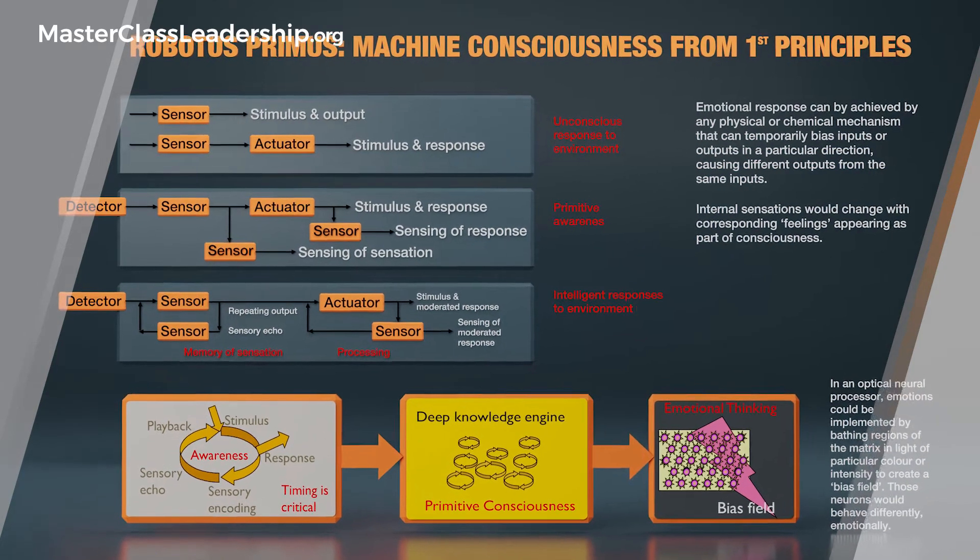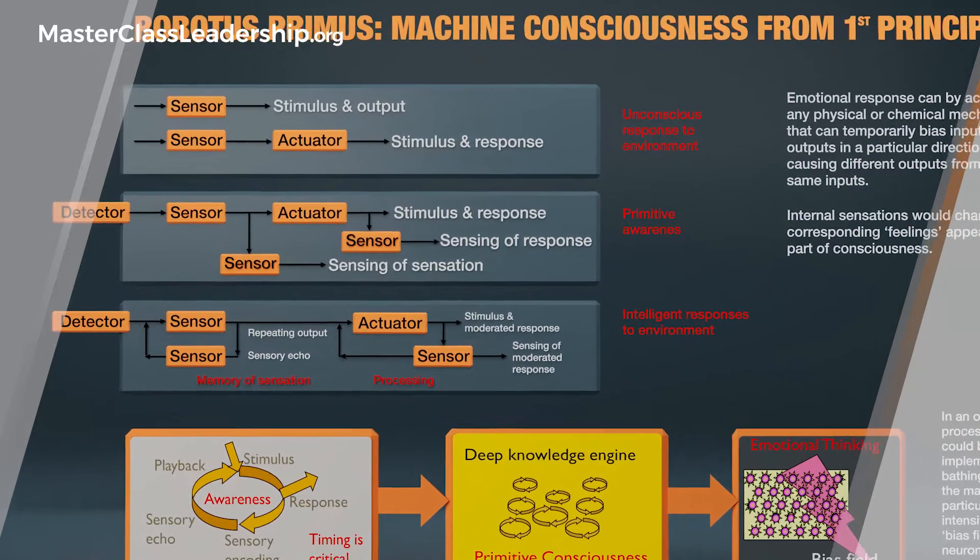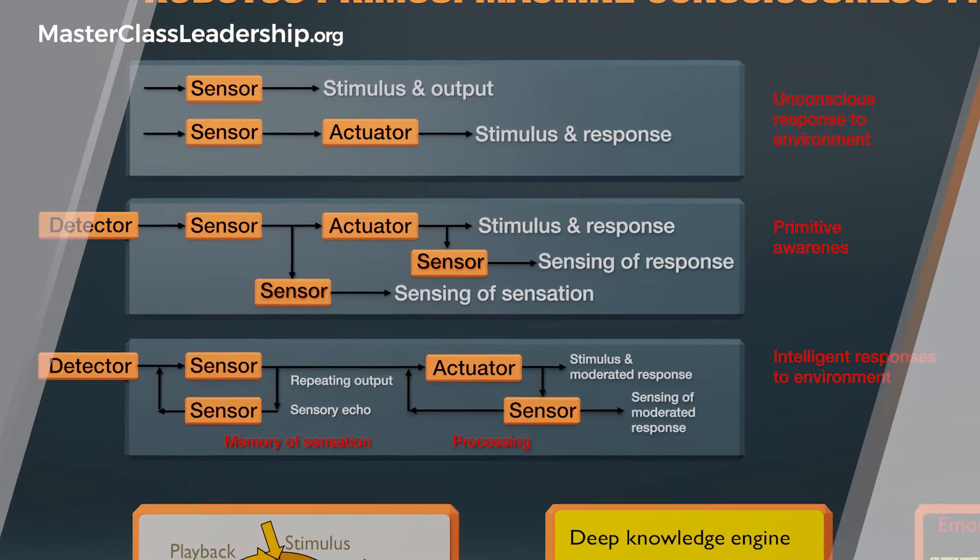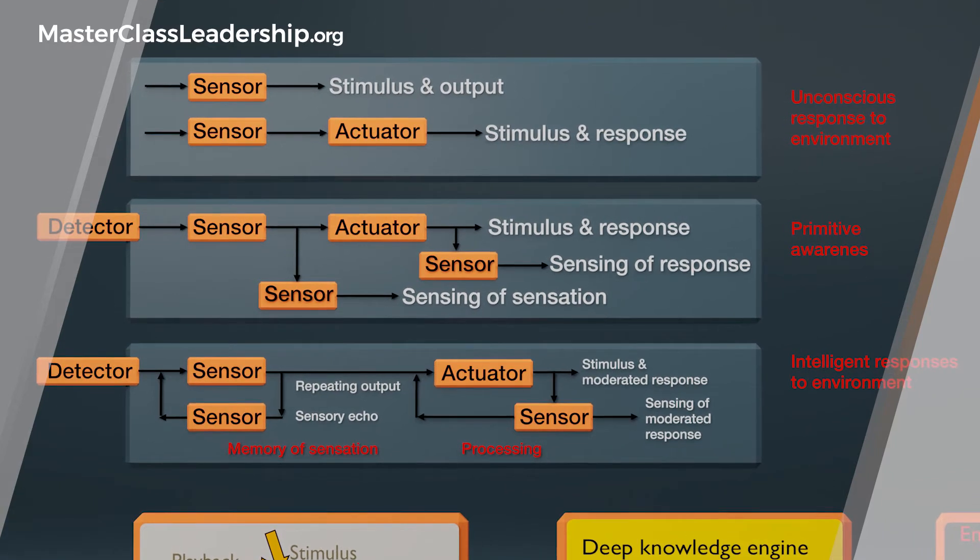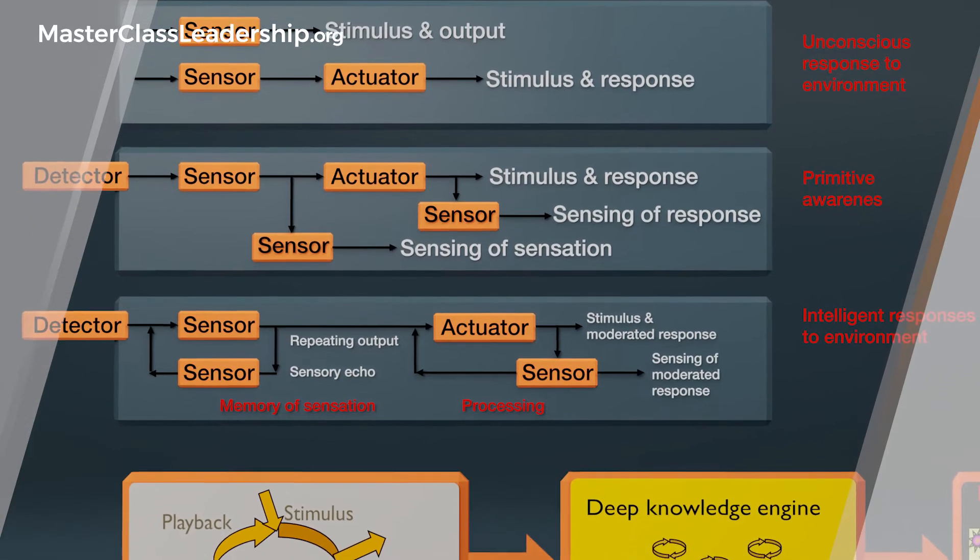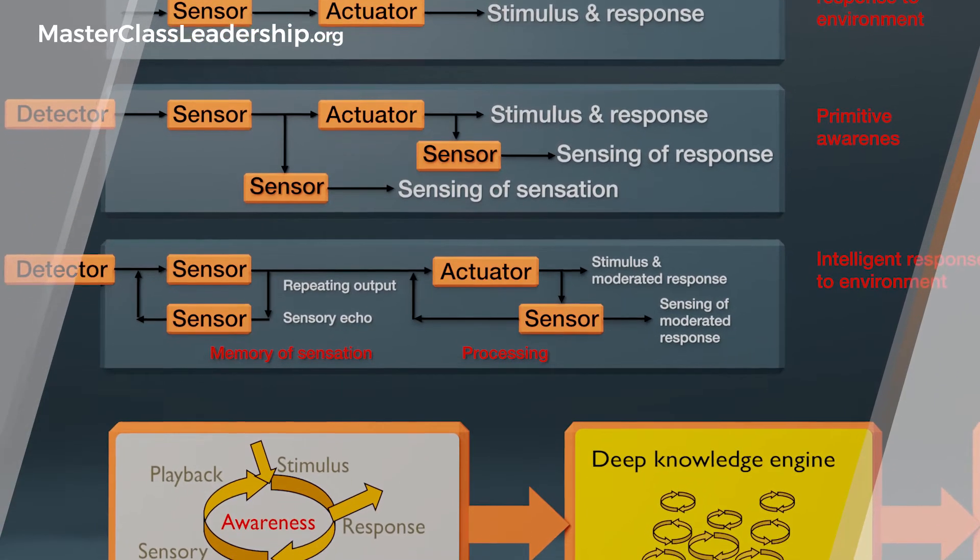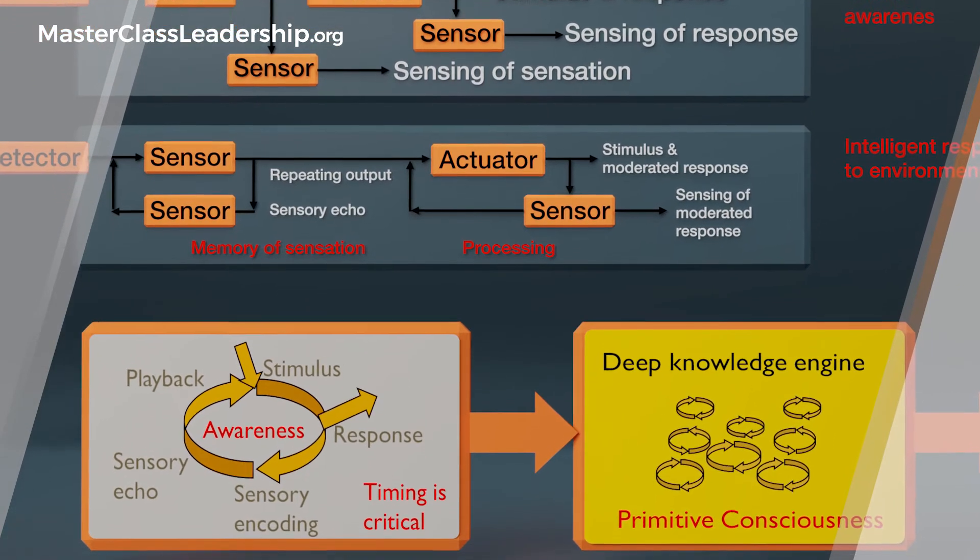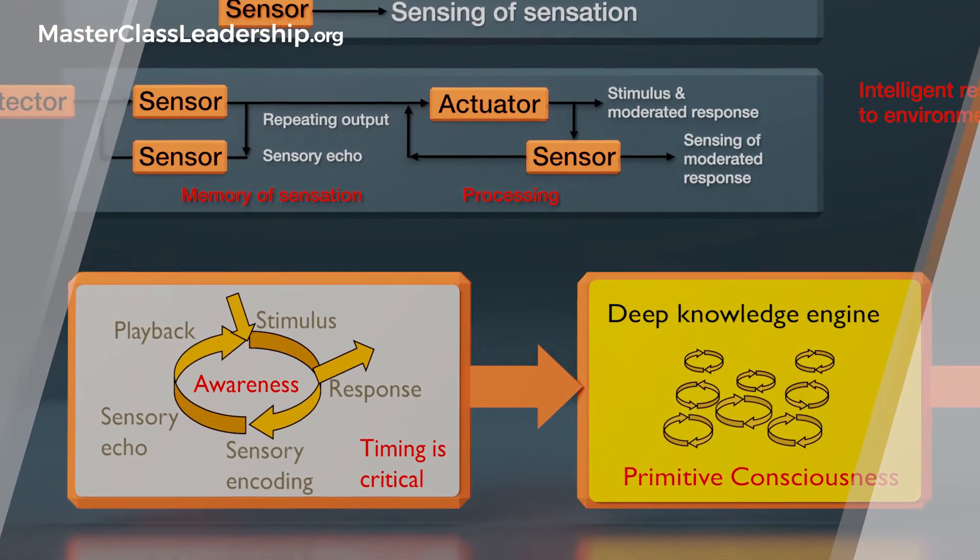And then you add some sensors and some actuator circuits in there and some more sensors which detect the actual actions of that. So you can sense the sensations, and when you get to that point where you're sensing the sensations and you're sensing that you're responding, then you're starting to get some very primitive awareness and you could think of that as machine consciousness. If you were to do the same thing using advanced AI.